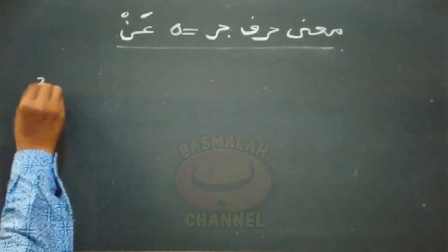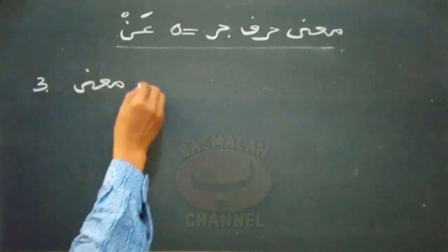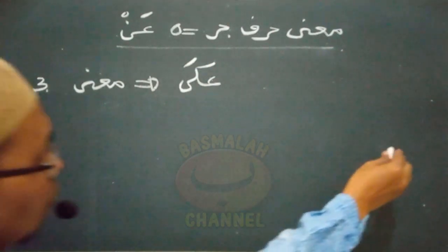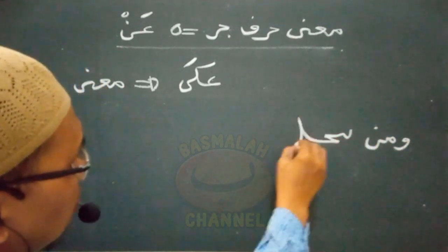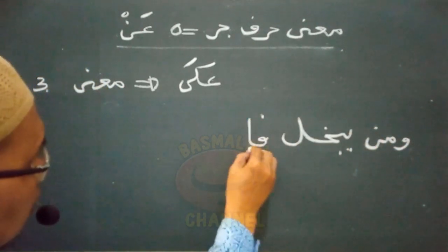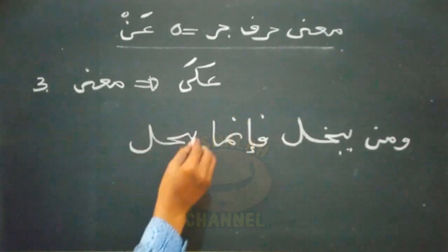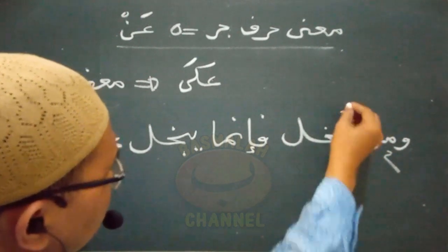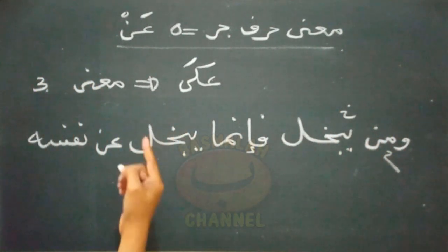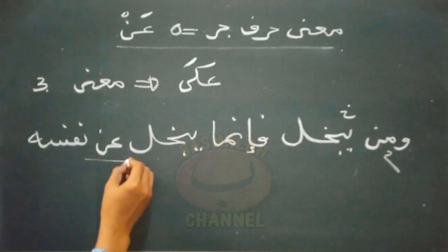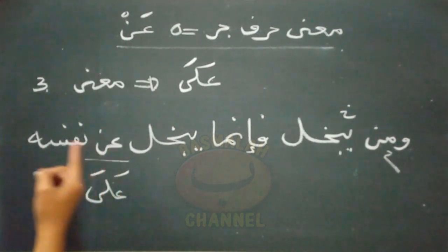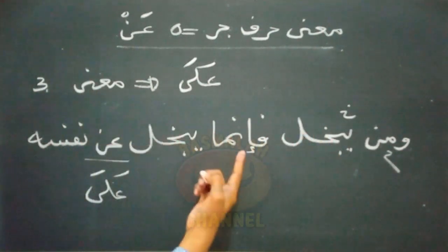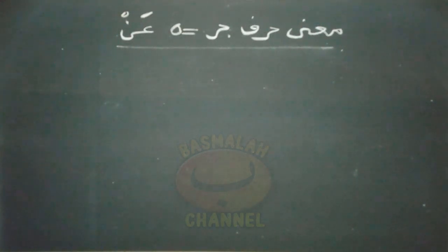Kemudian yang ketiga, huruf jer an ini adakalanya memiliki makna yang sama dengan huruf jer 'ala, yaitu bermakna atas. Contohnya seperti lafad 'wa man yabkhalu fa innama yabkhalu an nafsihi'. An nafsihi di sini maknanya sama dengan 'ala nafsihi. Jadi artinya: barang siapa yang bakhil maka sesungguhnya dia itu bakhil terhadap dirinya sendiri.